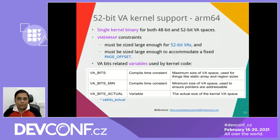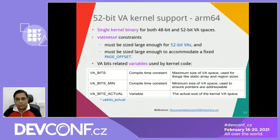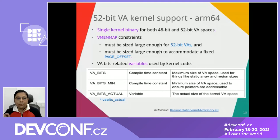The kernel uses mainly three variables to handle both 48-bit and 52-bit virtual address widths and make the early boot-time decision. These are: VABITS — the maximum size of the virtual address space; VABITS_MIN — the minimum size; and VABITS_ACTUAL — the actual size. If you want to check the VA space range supported by your running ARM64 kernel, look at the value of VABITS_ACTUAL.